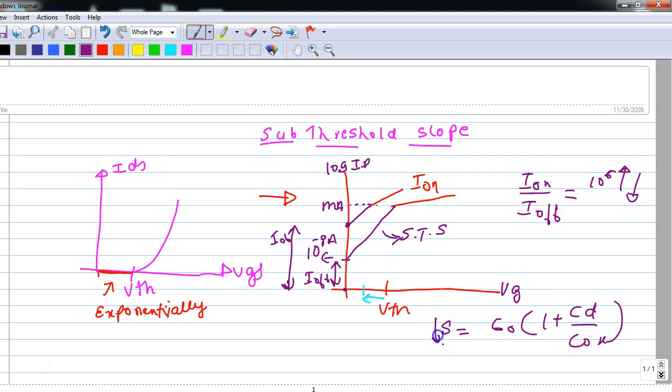And lesser is this value, steeper will be this curve. And actually, we want a curve which is more steep because a steeper curve or a steeper slope will give us less off current. For example, if it is more steep like this, we have a lesser off current.